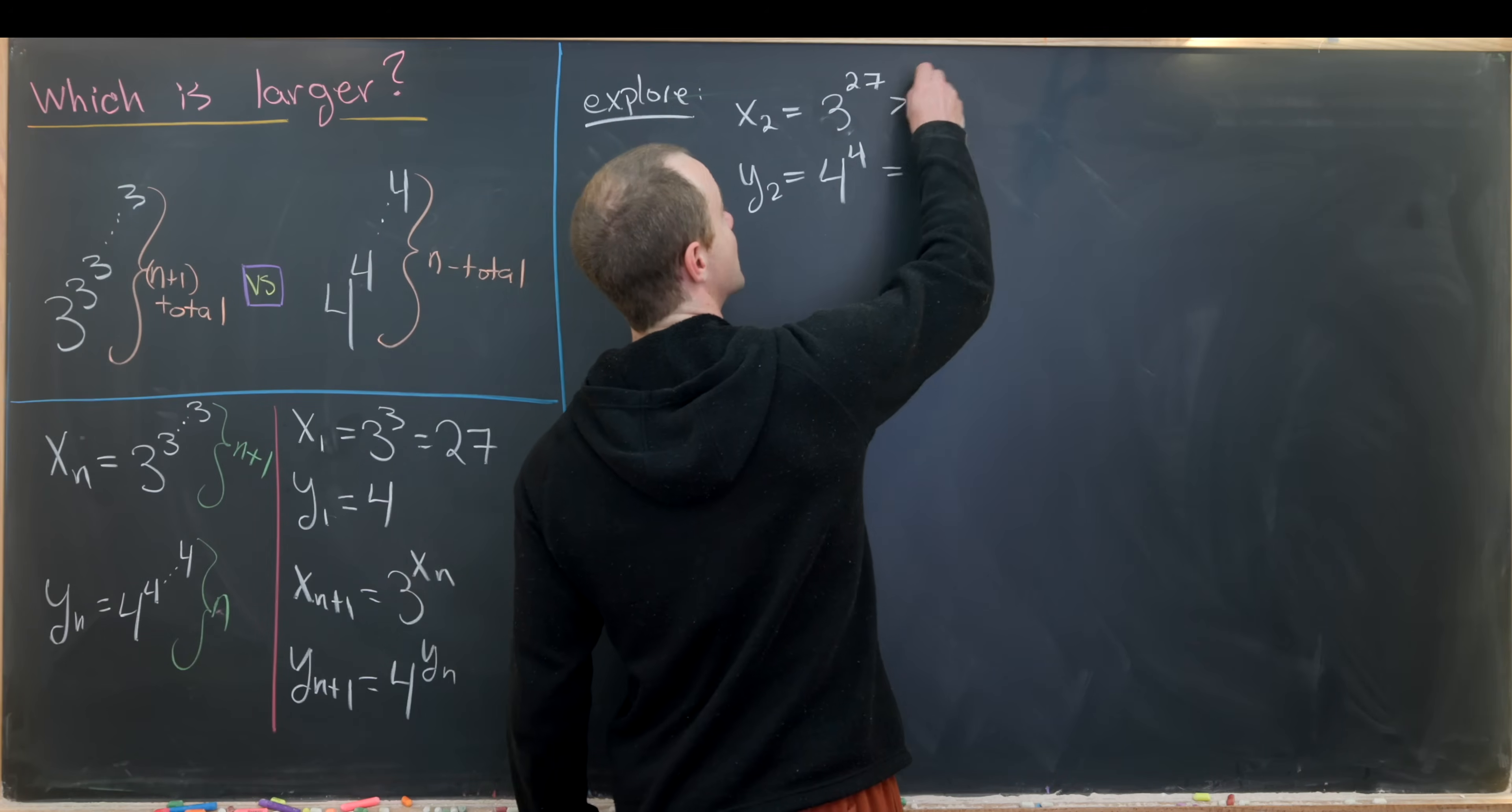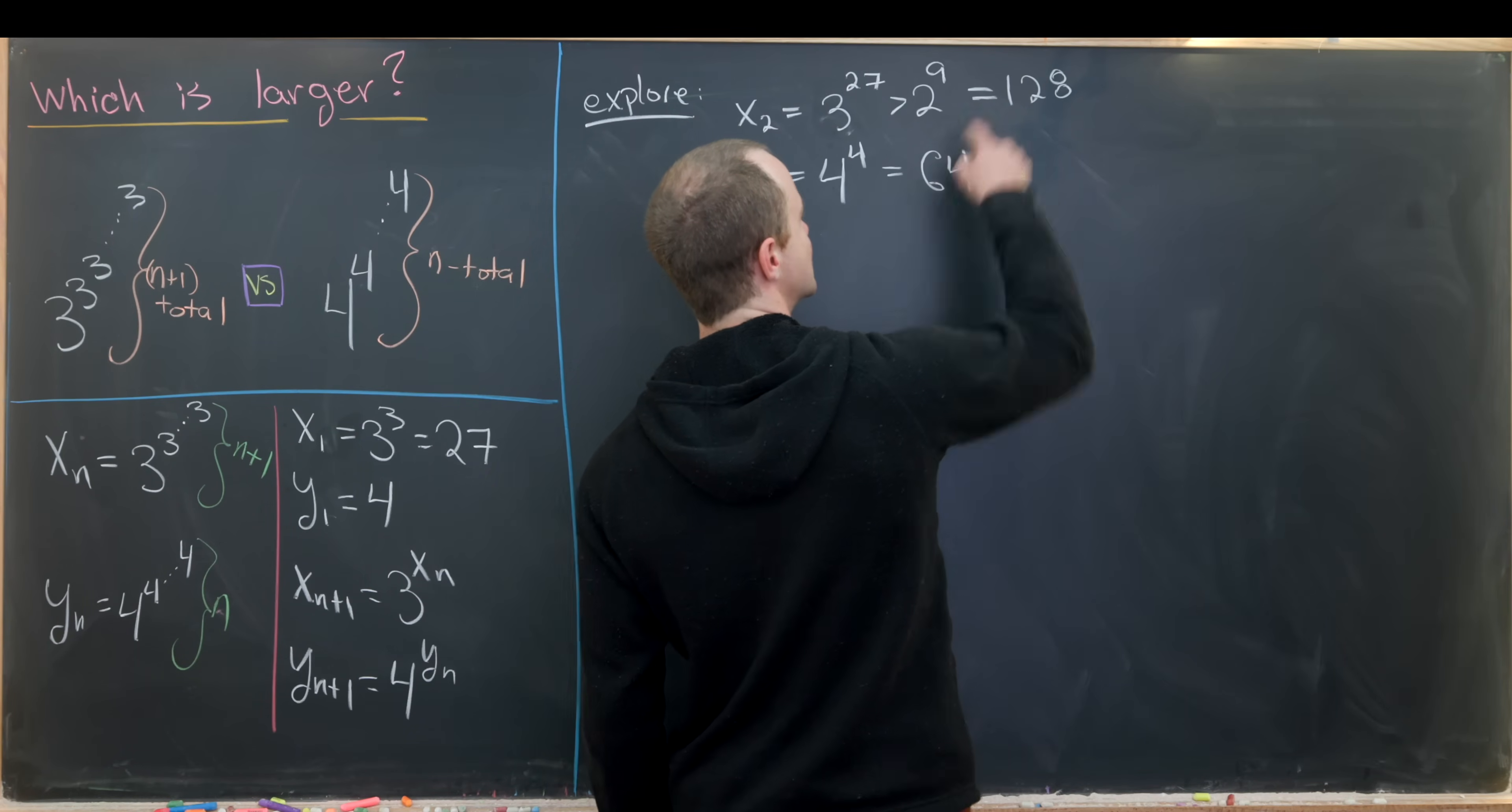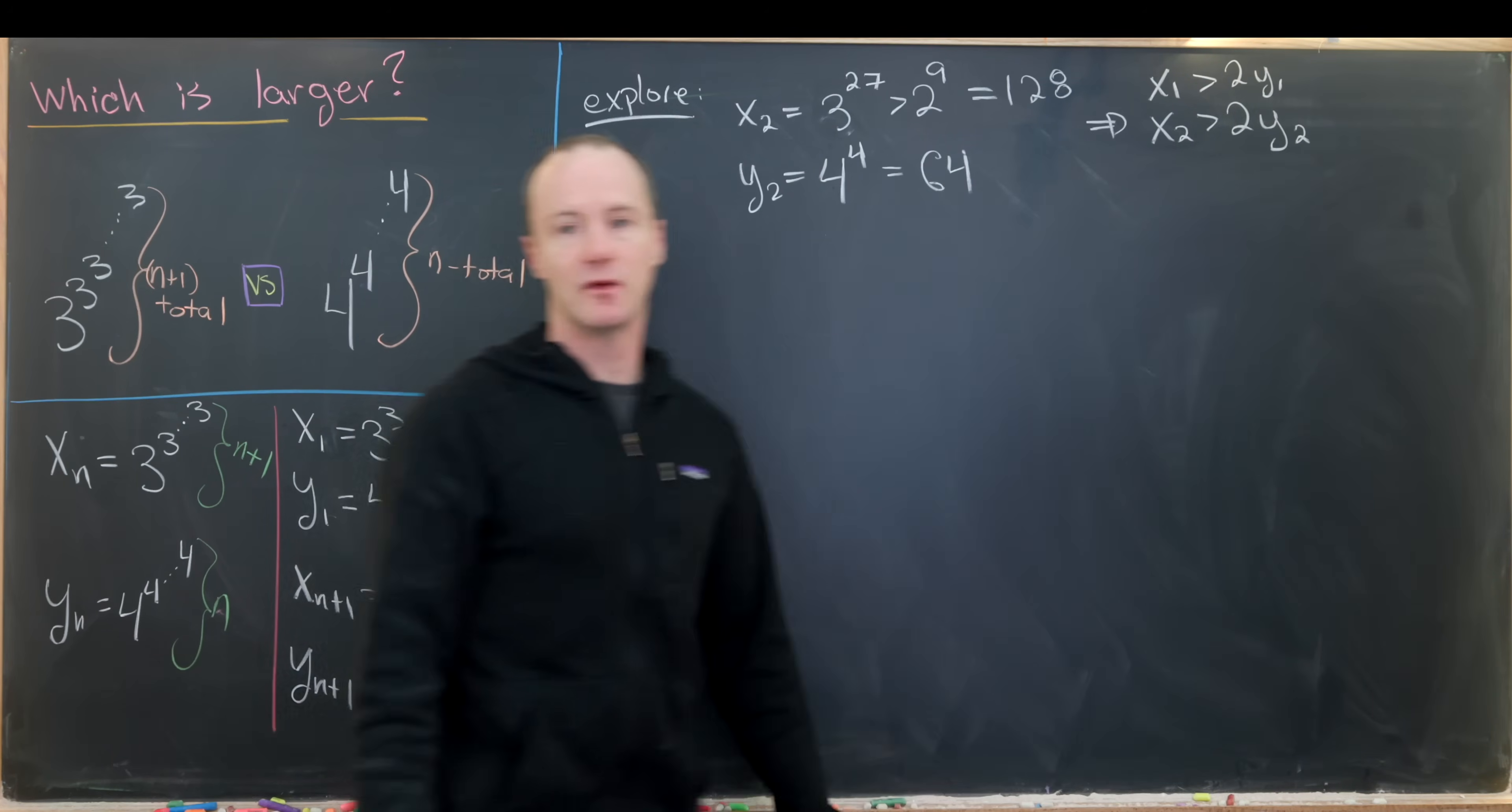So this is going to be bigger than 2 to the 9, and that's because the base is bigger and the exponent is bigger. But let's notice that 2 to the 9 is 512. But notice that 512 is 2 times 256. So putting this all together, we see that x2 is larger than 2 times y2. Furthermore, we see that x1 is also larger than 2 times y1.